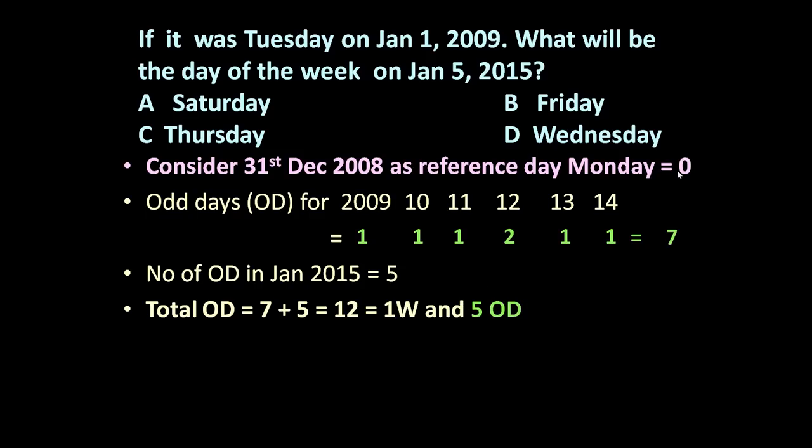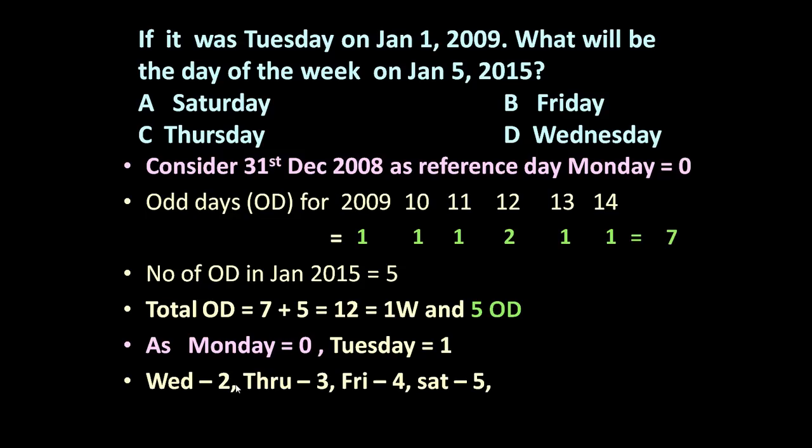We have assumed Monday as 0. It means Monday 0, Tuesday is 1, Wednesday 2, Thursday 3, Friday 4, Saturday 5. So up to 5th January 2015, 5 odd days are there. Just now we have calculated, so obviously 5th January 2015 will be Saturday.